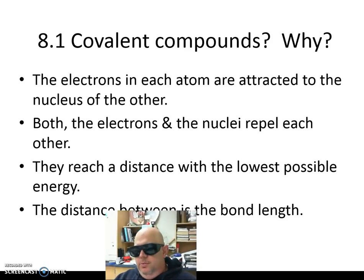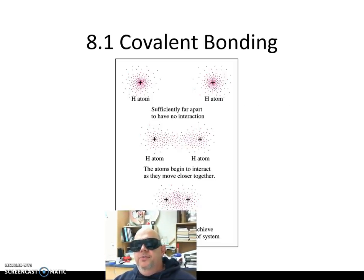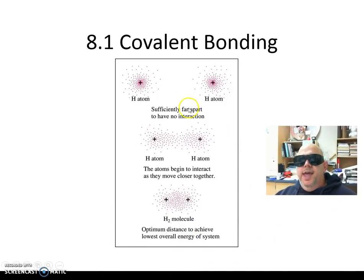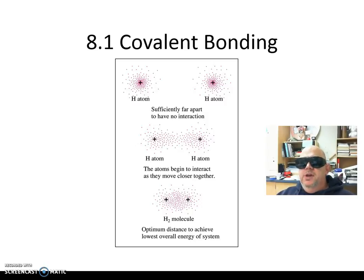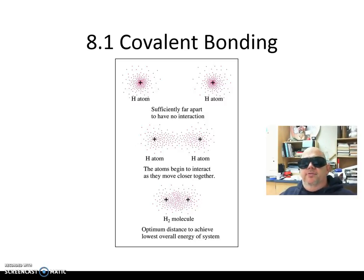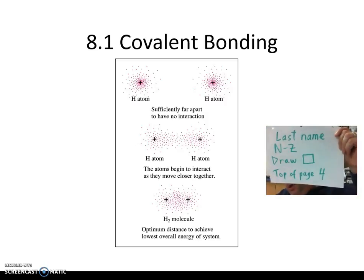The distance between those atoms in question is going to be the bond length. When we look at covalent bonding, if you have two hydrogen atoms that are far apart, there's not going to be a lot of interaction. They're too far away to have an effect on each other. But if they come closer together, there's going to be some interaction. Think of those dots not as electrons but as the electron cloud — that region. For the hydrogen atom, we're going to call it the 1s: level 1, sub-level s, and the shape of the orbital is a sphere. There is a certain distance to achieve the lowest overall energy of the system.